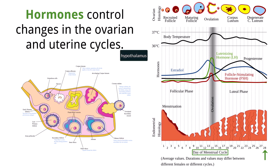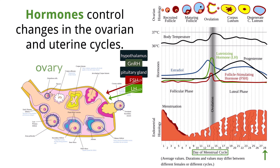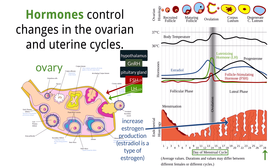The hypothalamus is the control center for the menstrual cycle and produces a hormone called gonadotrophin-releasing hormone, which targets the pituitary gland. The pituitary gland then produces and releases two hormones — FSH, or follicle-stimulating hormone, and LH, or luteinizing hormone. Both hormones target the ovaries and have several effects. One effect is to increase the production and secretion of estrogen from the follicle cells of the ovary. Estrogen targets the endometrium and causes it to increase the density of blood vessels. This is a positive feedback loop, as estrogen stimulates the pituitary gland to secrete more FSH and LH.